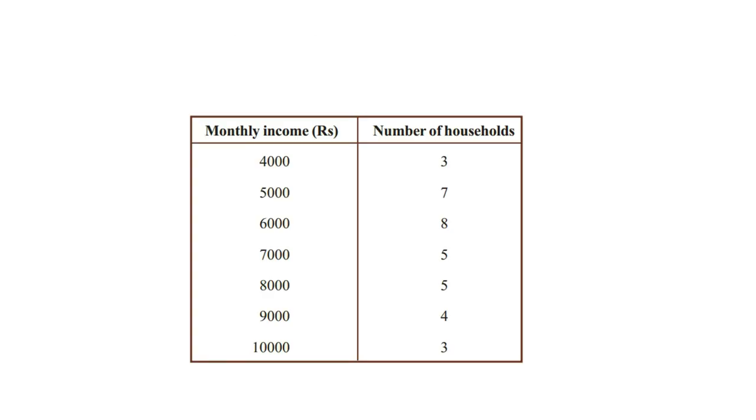Today, let us learn how to calculate median from a frequency table. A frequency table is a table made by writing all the scores in one column and corresponding frequencies in the second column. For example, this is a frequency table showing monthly income and number of households. These are called scores and these are called frequencies.